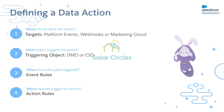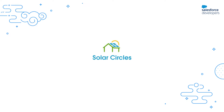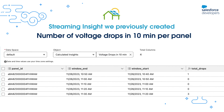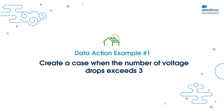Let's now look at a few examples. As with the other episodes in this series, we are working with SolarCircles, a fictitious company that sells solar panels. In the previous episode, we created a streaming insight that calculates the number of voltage drops a panel has in a 10-minute window. Now I need to create a case whenever the number of voltage drops for a panel is more than 3. To achieve this, I'll create a data action that fires a platform event whenever the count exceeds 3, and then I'll subscribe to this platform event to create a case.